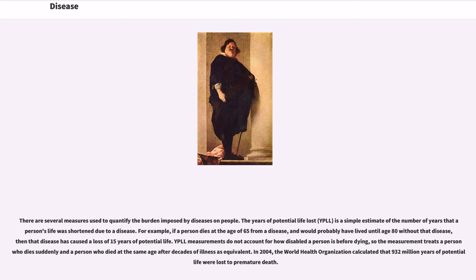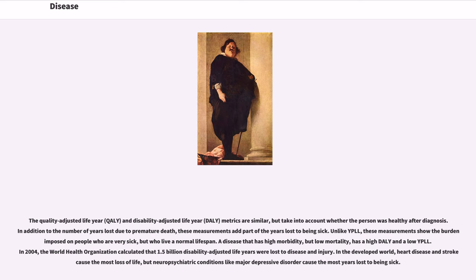In 2004, the World Health Organization calculated that 932 million years of potential life were lost to premature death. The Quality Adjusted Life Year (QALY) and Disability Adjusted Life Year (DALY) metrics are similar, but take into account whether the person was healthy after diagnosis. In addition to the number of years lost due to premature death, these measurements add part of the years lost to being sick. Unlike YPLL, these measurements show the burden imposed on people who are very sick but who live a normal lifespan. A disease that has high morbidity but low mortality has a high DALY and a low YPLL.